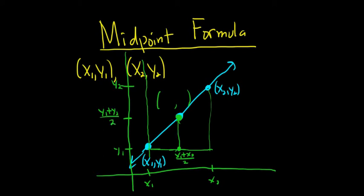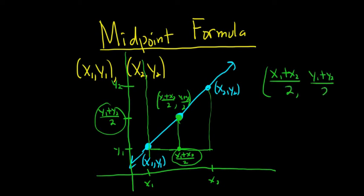So the midpoint, that's going to be our x coordinate, and that's going to be our y coordinate. So it'll be x1 plus x2 over 2, and then y1 plus y2 over 2. So the formula is x1 plus x2 over 2, and then y1 plus y2 over 2. So you just add up the x's and divide by 2, and add up the y's and divide by 2.